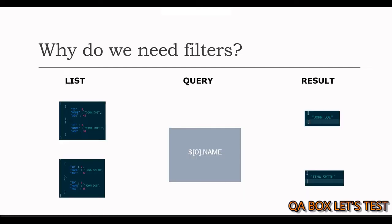But aren't you wondering why do we require filters when we can access JSON array items using index? We learned index, union, and slice expressions in the last video. In that video, I also said the index approach works really well with primitive types like string, number, boolean, and null. However, it is not advised to use index when array items are of type object — in such cases, we filter the JSON dataset using filter criteria.